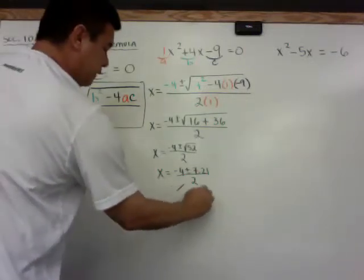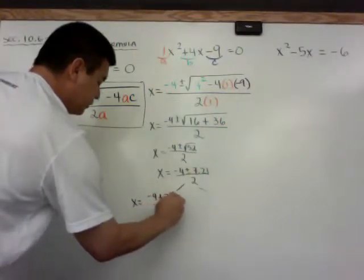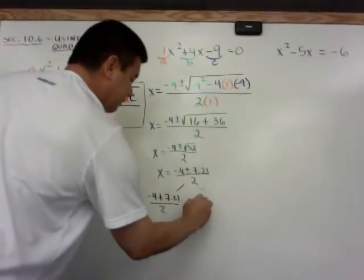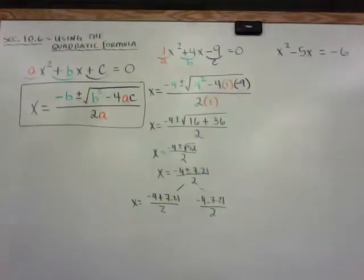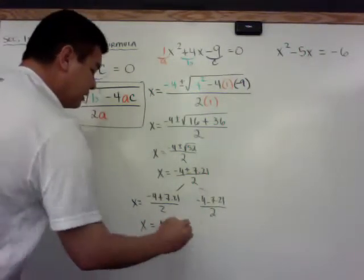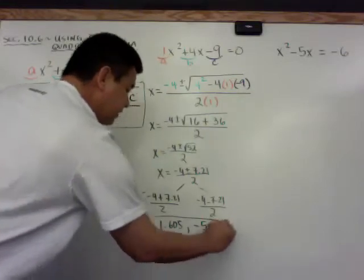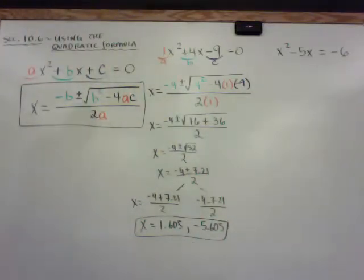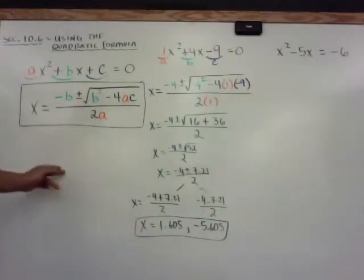So x is equal to negative 4 plus or minus 7.21 all over 2. And this is where we need to split it for the plus or minus. So it's negative 4, x is equal to negative 4, plus 7.21 all over 2, and negative 4 minus 7.21 all over 2. When you do that in your head, you should have this memorized. X is equal to 1.605 or negative 5.605. And so there are your solutions, otherwise known as your x-intercepts. And it's the same answer as far as where it crosses the x-axis on your graph if you were to graph it.